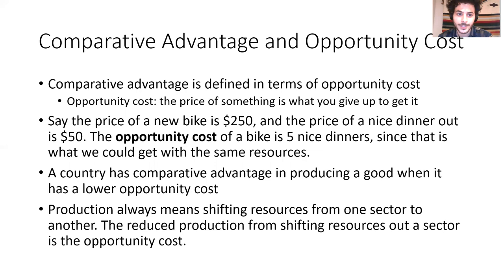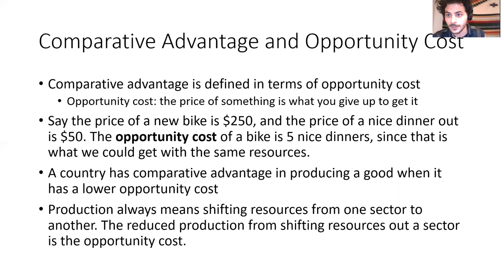Here's a simple example. Say there are two things you care about: bikes and nice dinners. The price of a new bike is $250 and a nice dinner is $50. In terms of opportunity cost, if you get one bike, that costs you $250—and you could have taken that same money and bought five nice dinners. So the opportunity cost of a bike is five nice dinners: to get one bike, you give up five meals.